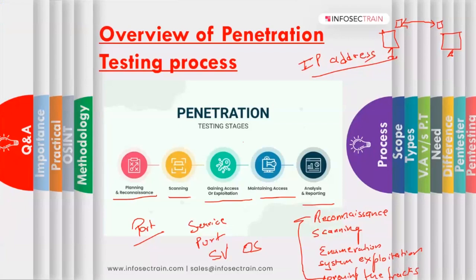After scanning, you move to gaining access or exploitation. From scanning you know which services are running on which ports. You also find the service version — for example, FTP version 2.3.4. You then search the internet for any known vulnerability related to that specific version. If one exists, you exploit it to gain access to the system. That is the gaining access or exploitation phase.